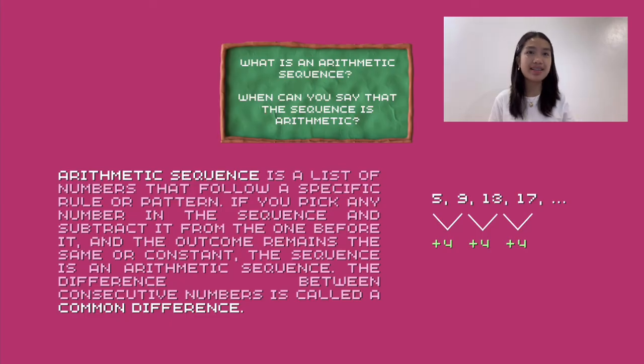So, what is an arithmetic sequence? And when can you say that the sequence is arithmetic? Arithmetic sequence is a list of numbers that follow a specific rule or pattern. If you pick any number in the sequence and subtract it from the one before it, and the outcome remains the same or constant, the sequence is an arithmetic sequence. The difference between consecutive numbers is called a common difference.